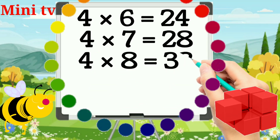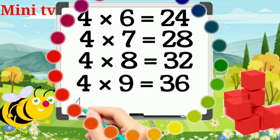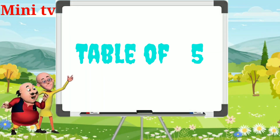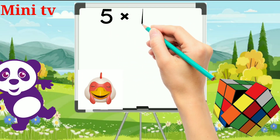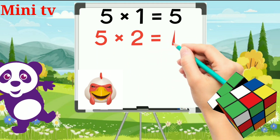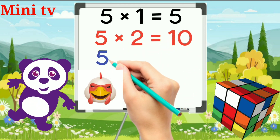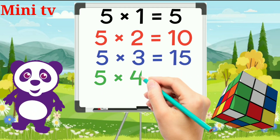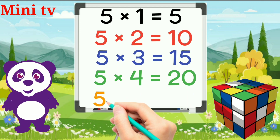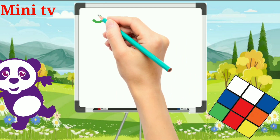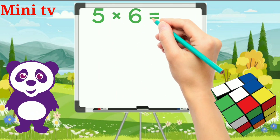Table of 5. 5 ones are 5. 5 twos are 10. 5 threes are 15. 5 fours are 20. 5 fives are 25. 5 sixes are 30.